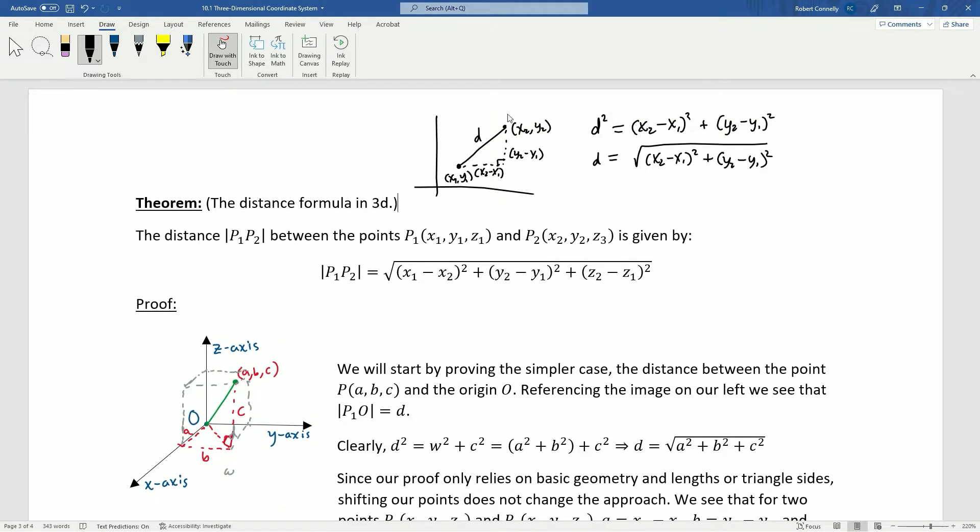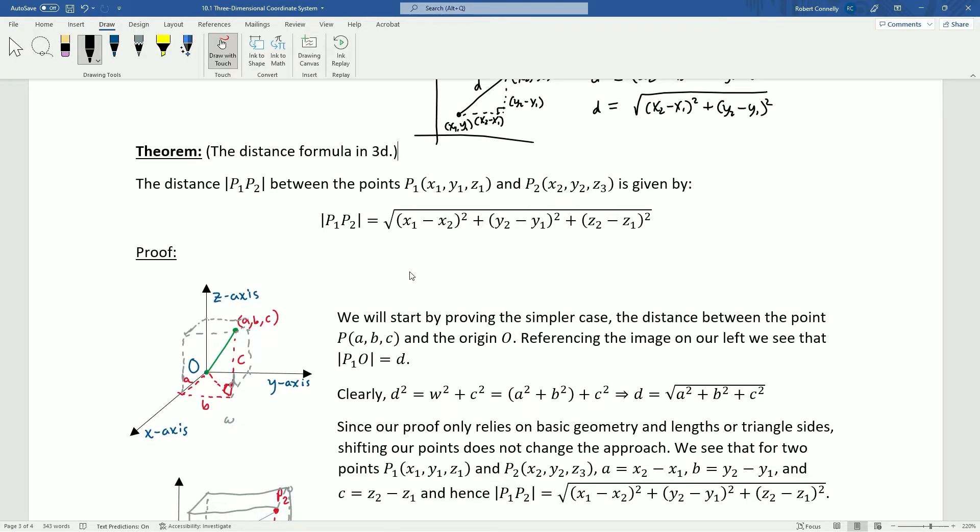So, in this case, I've written it actually x₁ minus x₂ squared plus y₂ minus y₁ squared plus z₂ minus z₁ squared, and take the square root. So, that's the distance between two points in three dimensions. Now, it's a little bit different here because you can't just straight up use the Pythagorean theorem. So, let's actually prove this. So, we're going to start with a simple case where we consider the distance between the point ABC and the origin O. So, if we look at the image on the left, and what we want here is the distance from the origin to this point, and we're calling this distance D.